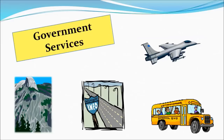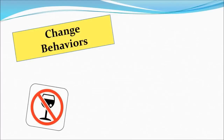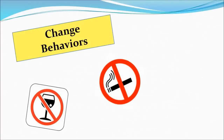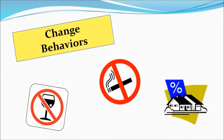This is not the only reason the government puts taxes on things. The government also collects taxes as a way of changing people's behavior. There are certain activities the government tries to encourage or discourage. For example, the government tries to discourage the use of alcohol and tobacco by taxing them, while they use taxes to encourage people to buy their own home.